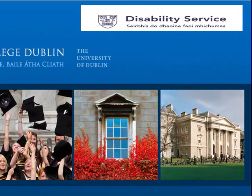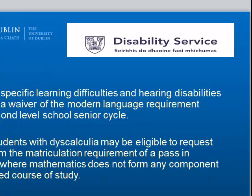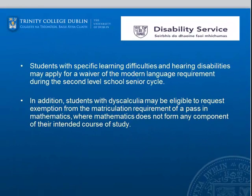This podcast explains the process for applying to Trinity College for a waiver of the Language or Mathematics matriculation requirement. Students with specific learning difficulties and hearing disabilities may apply for a waiver of the Modern Language requirement during the second level school senior cycle.